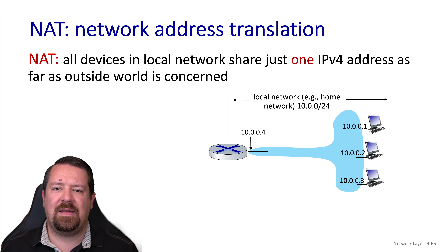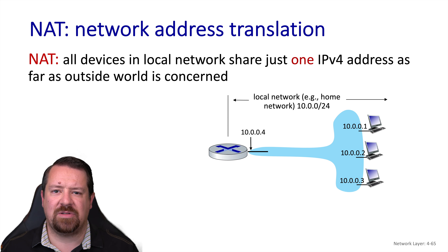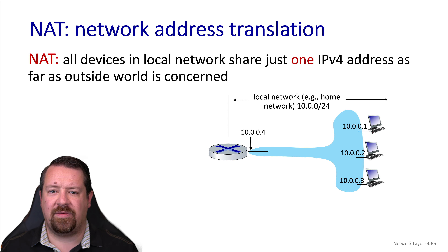The basic idea here is allowing a bunch of devices to share one public IPv4 address. In this example, the devices on this subnet are using a 10-dot address. All 10-dot prefixes are considered private address space — they are not routed on the public internet. So I can have a 10-dot network and you can also have a 10-dot network, unlike public IP addresses, which must be unique throughout the entire internet.